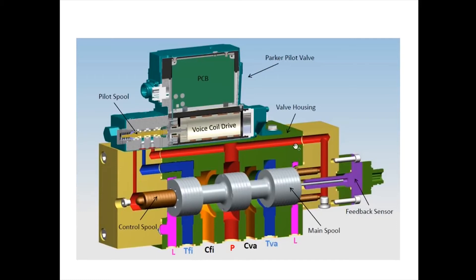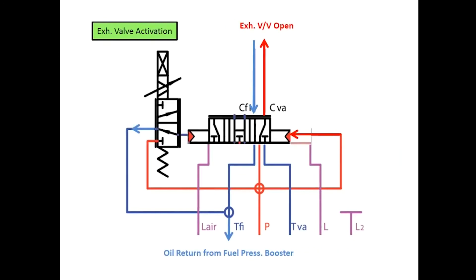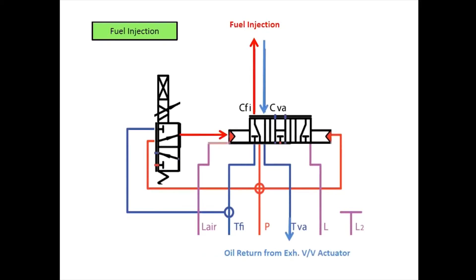Now we can see how FIVA is activated under two conditions: exhaust valve activation and fuel injection. You can see from the lines how oil moves. We have drain from here and supply from this side for exhaust valve opening. For the second activation (fuel injection), oil passes from here and goes from this side. You can see the difference in how it moves.